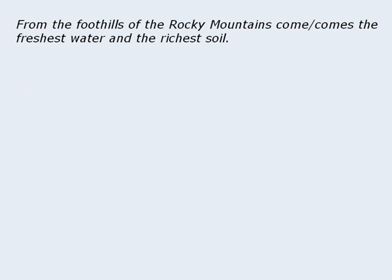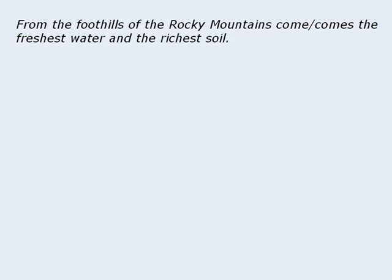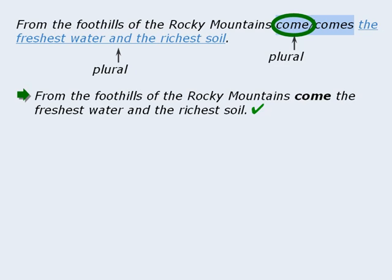Here's another sentence to consider. To begin, we could eliminate the prepositional phrase 'from the foothills of the Rocky Mountains.' However, this leaves us with a somewhat confusing sentence. Another way to approach this is to first identify the verb in the sentence. The verb here is either 'come' or 'comes,' so the subject will be the noun that performs this action. We know that water and soil are the nouns that are coming, so the subject is 'the water and the soil.' Since this subject is plural, we need the plural verb 'come,' as in: from the foothills of the Rocky Mountains come the freshest water and the richest soil.